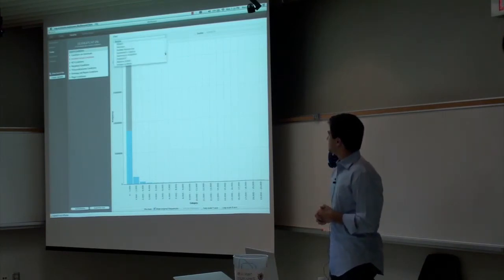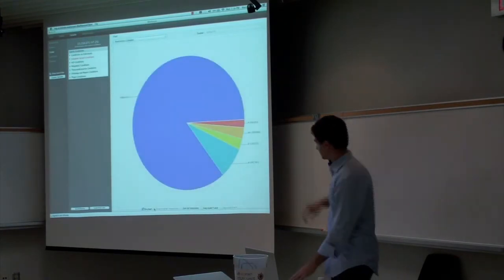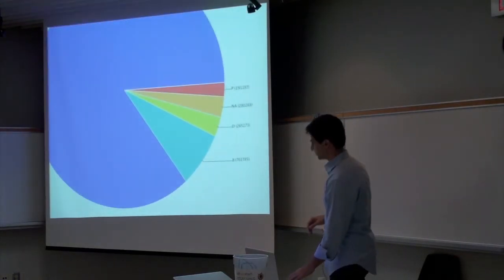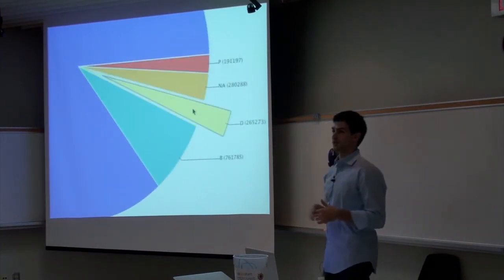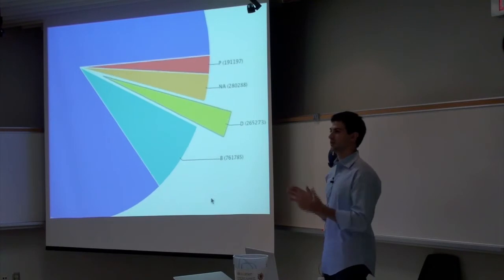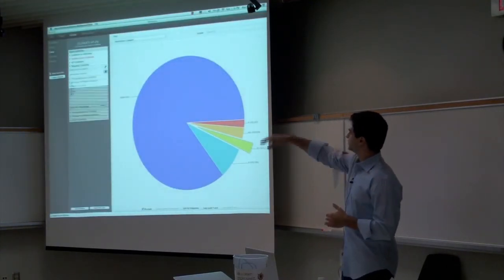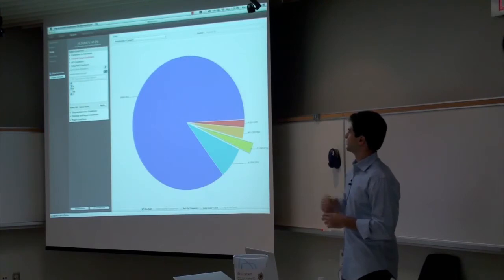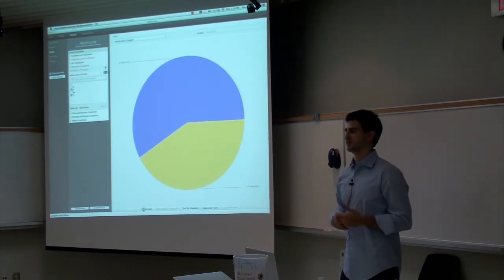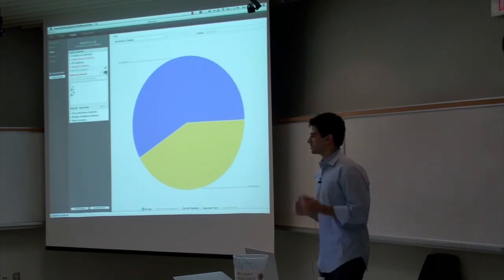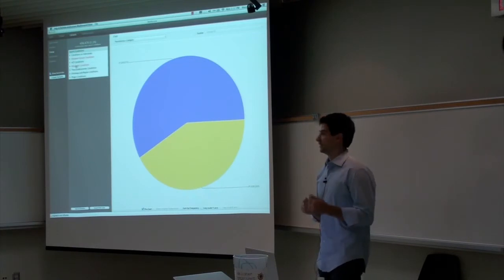Now we switch to the harmfulness predictions from PolyPhen — this is a pie distribution of those categories. The P stands for probably damaging and D stands for damaging, and in this example we're going to focus on those first. We go over to our search conditions and easily specify this query, leaving us with 456,000 variants — just 2.1% of our original variants remaining — and we're going to try to get that down to 10.